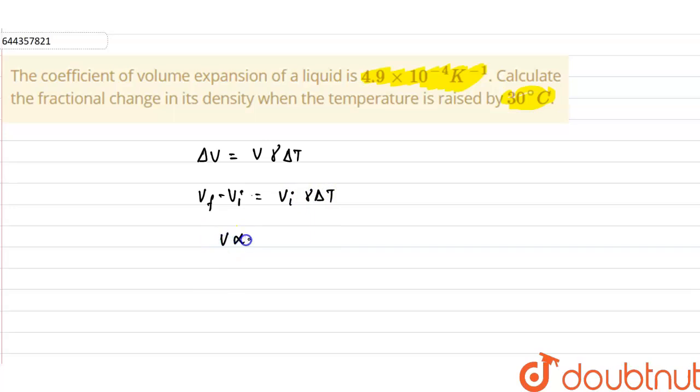Now as we know volume is inversely proportional to density for a unit mass. Therefore what we can write is 1 upon final density minus 1 upon initial density will be equals to 1 upon initial density γ times ΔT.